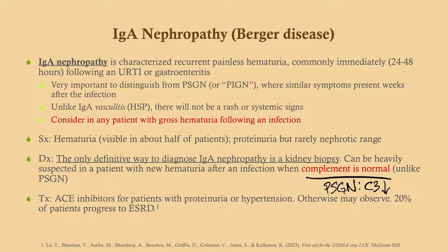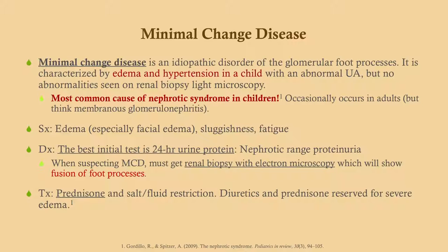Minimal change disease is classic Step 1 material. It is idiopathic and is a disorder of the glomerular foot processes, which play a critical role in preventing protein from entering the filtrate. It is invariably characterized by nephrotic syndrome — patients will be highly edematous and hypertensive. So if you have a kid coming in who's edematous and running 150 over 90, get a urinalysis. If you see a ton of protein, think minimal change disease.